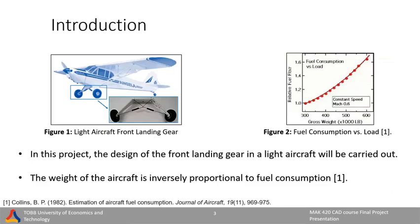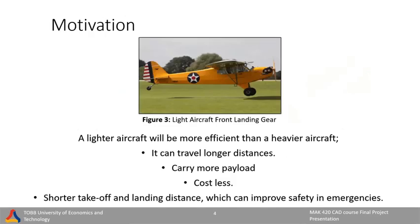In this project we are designing front landing gear for a light aircraft. The main goal of our project is to reduce the weight of this part. As you can see from the graph in figure 2, fuel consumption and the weight of the plane are strongly connected. When designing in aerospace, it is important that parts be as light as possible, because the weight of the aircraft is inversely proportional to fuel consumption. A light aircraft will be more efficient than a heavy aircraft — it can travel longer distances, carry more payload and cost less.